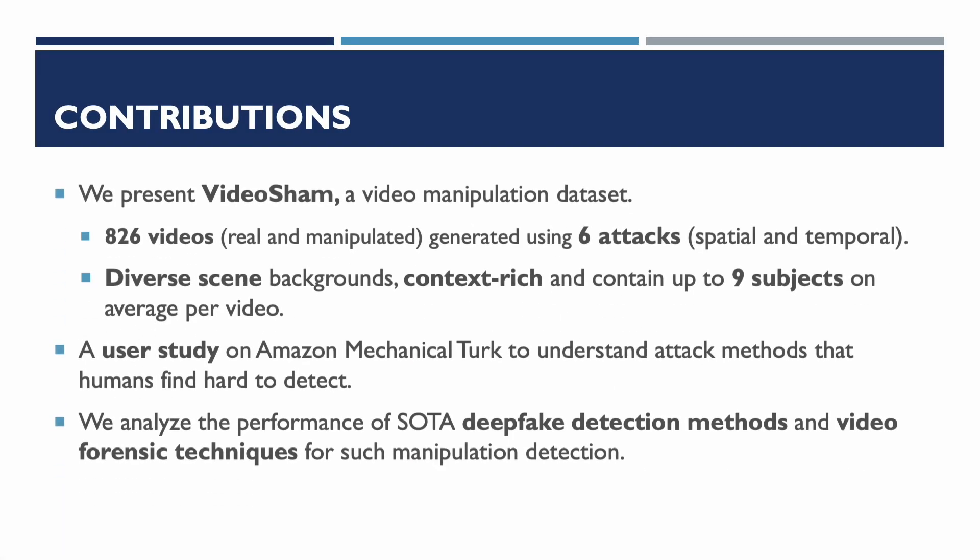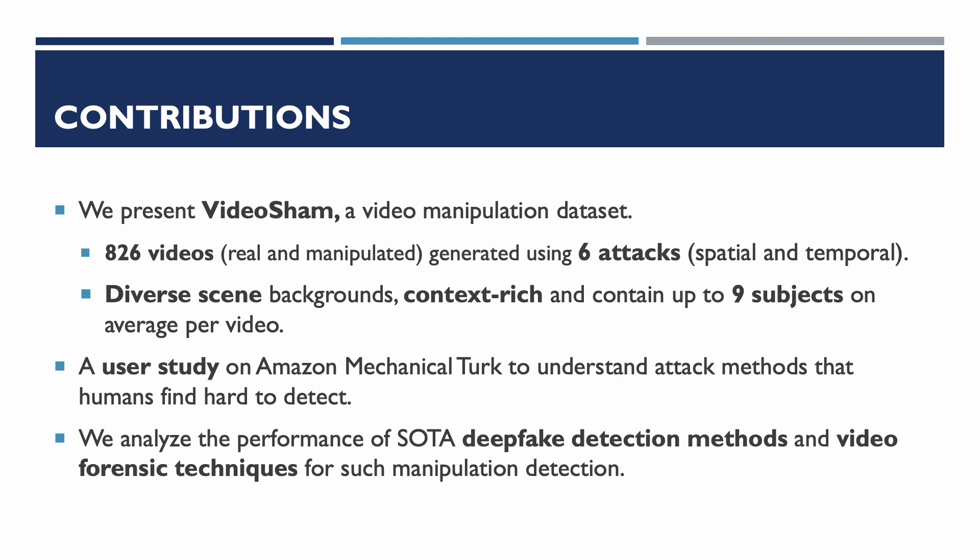In this work, we present VideoSham, a video manipulation dataset which contains 826 videos generated using six attack methods, both spatial and temporal. These videos have diverse scene backgrounds, rich context, and can contain up to nine subjects on average per video. We also present a user study conducted on Amazon Mechanical Turk to understand if humans find these attack methods hard to detect, and we analyze the performance of state-of-the-art deep fake detection methods and video forensic techniques for such manipulation detection.